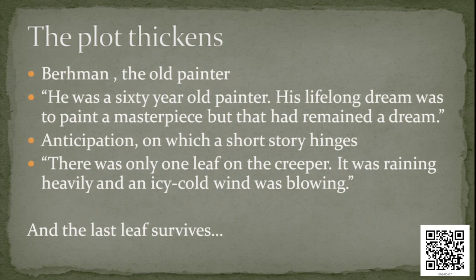Berman has been planning to paint a masterpiece all his life and it has not happened. This is where anticipation enters the plot — can Berman through some trick save Johnsy's life? We are now anticipating that Berman will probably paint a leaf even if the last leaf falls, and that is how Johnsy will get better. And this is exactly what happens.